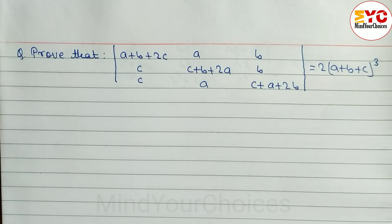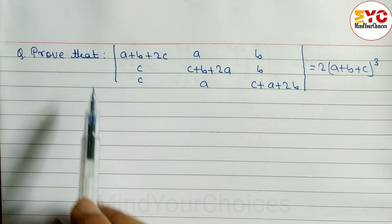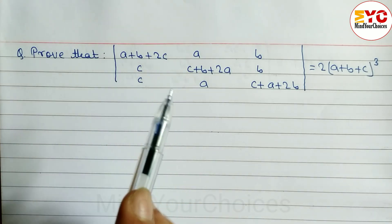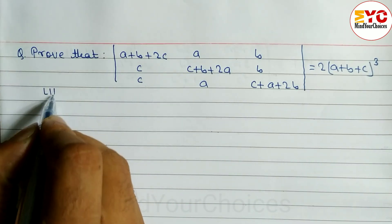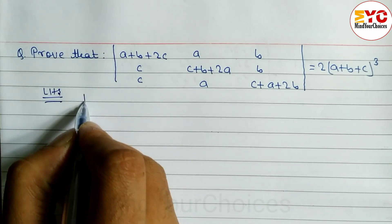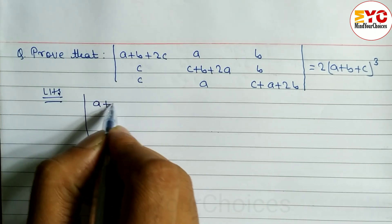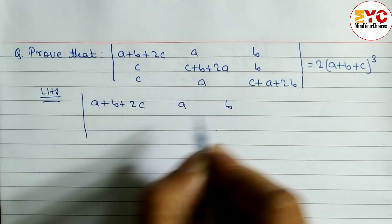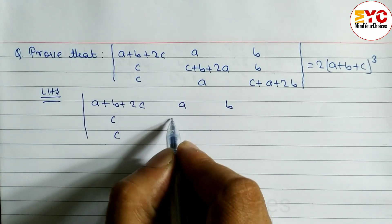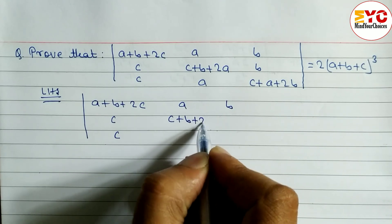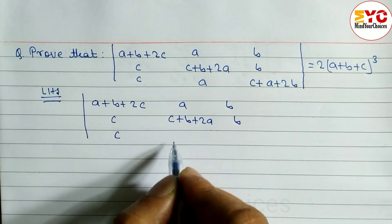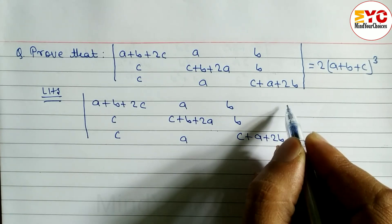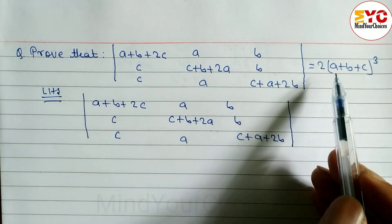Hello everyone, this question is taken from Class 12 business math. We have to prove by using properties of determinants. Let's take a start. Here we have to take LHS, and we can write the matrix with entries: A+B+2C, A, B; C, C+B+2A, B; A, C+A+2B.